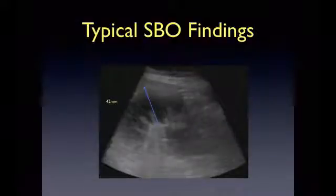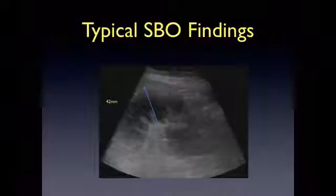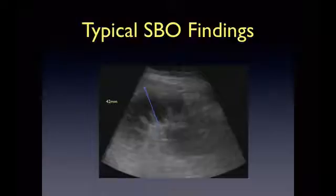This is a classic picture of SBO on ultrasound. You see a distended loop of bowel measuring approximately 42 mm, filled with liquid fecal material. It is important to note that the measurement should be taken at 90 degrees to the small bowel wall, as you can get falsely dilated measurements if they are taken in an oblique fashion.